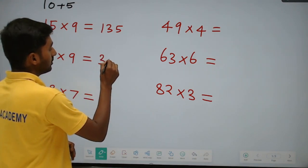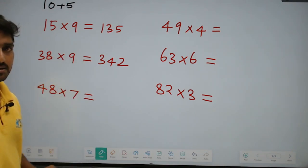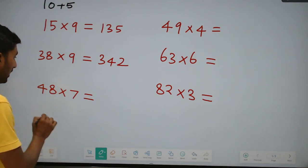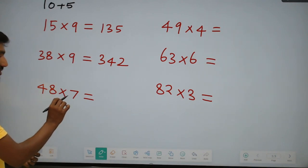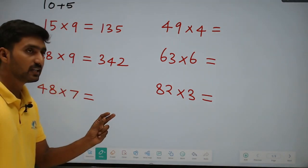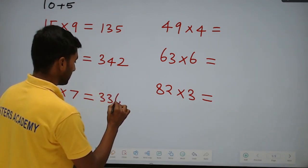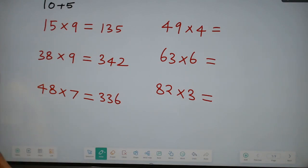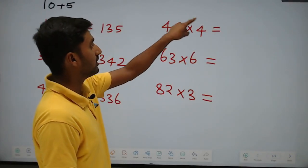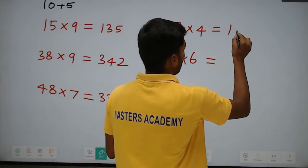342. It is very simple. Now, 49 into 4: split into 40 plus 9. 40 into 4 is 160. Plus 9 into 4 is 36. 160 plus 36 is 196.